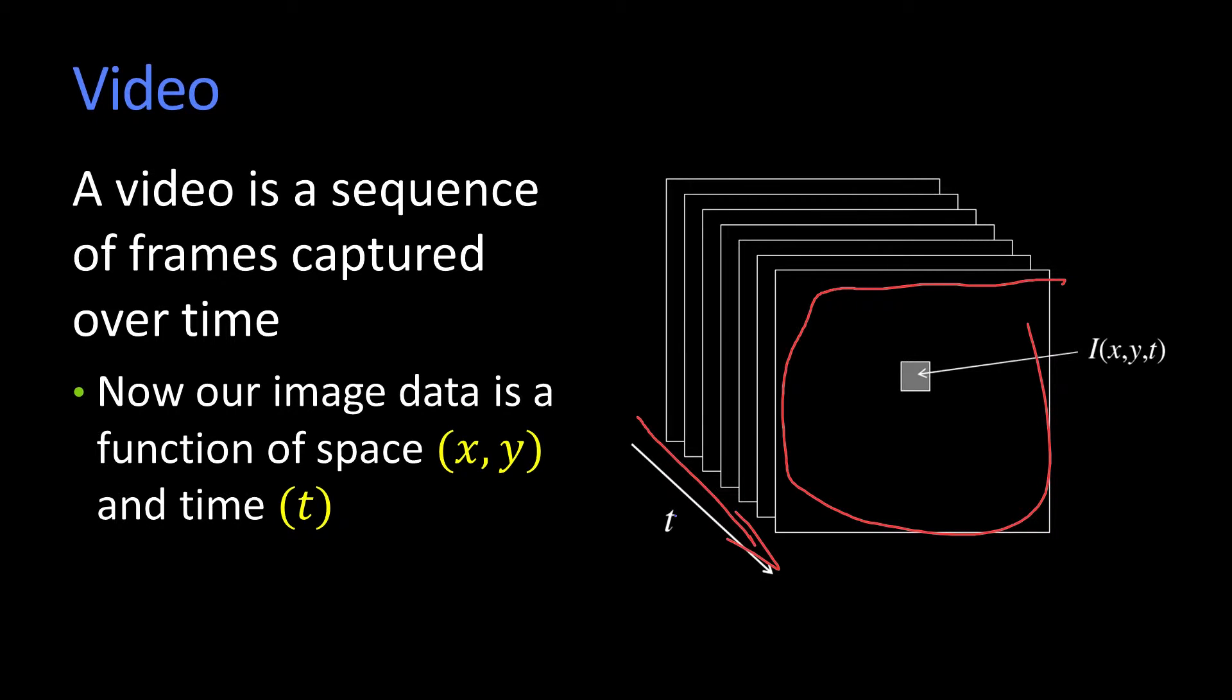And as time moves forward, I've got this volume of data. And so a pixel inside a video is actually a function of x, y, and t. So sometimes you'll see me going like this for video, and I'm talking about x, y, and t. That's the way I think of video - I think of video as a volume of data.